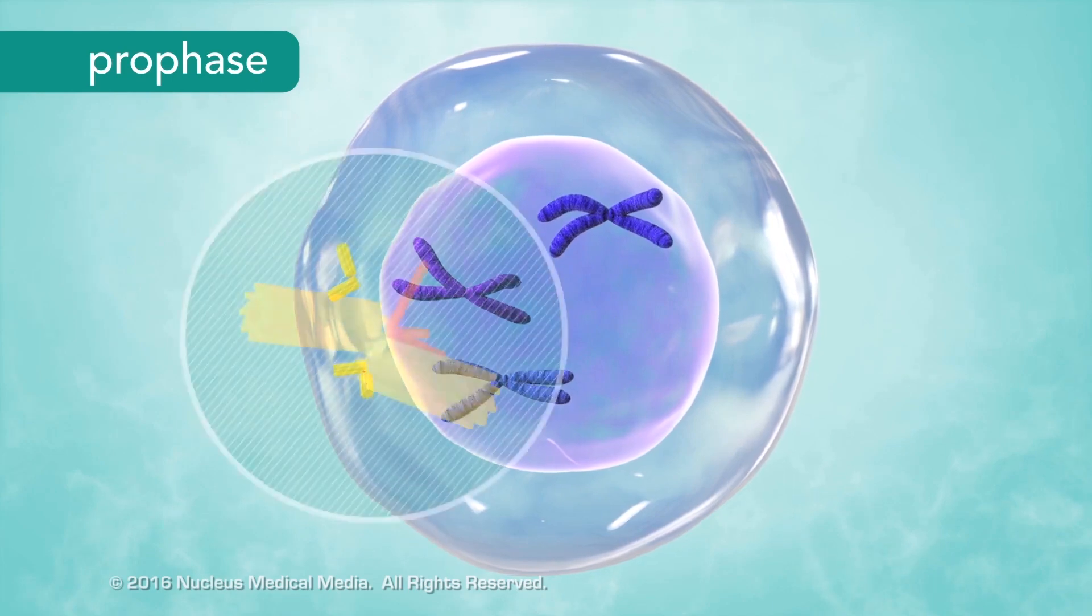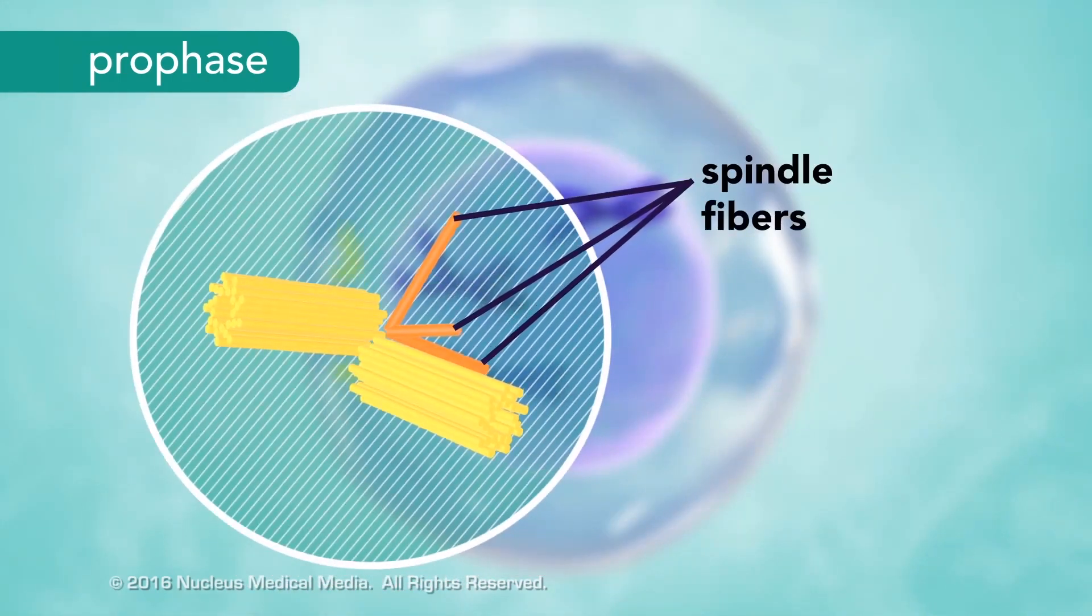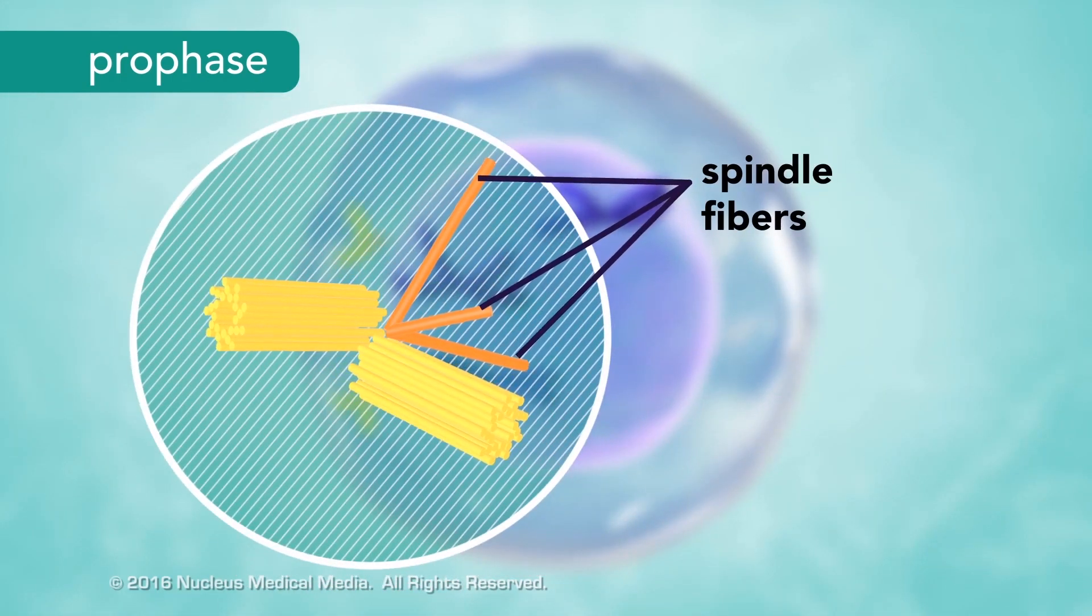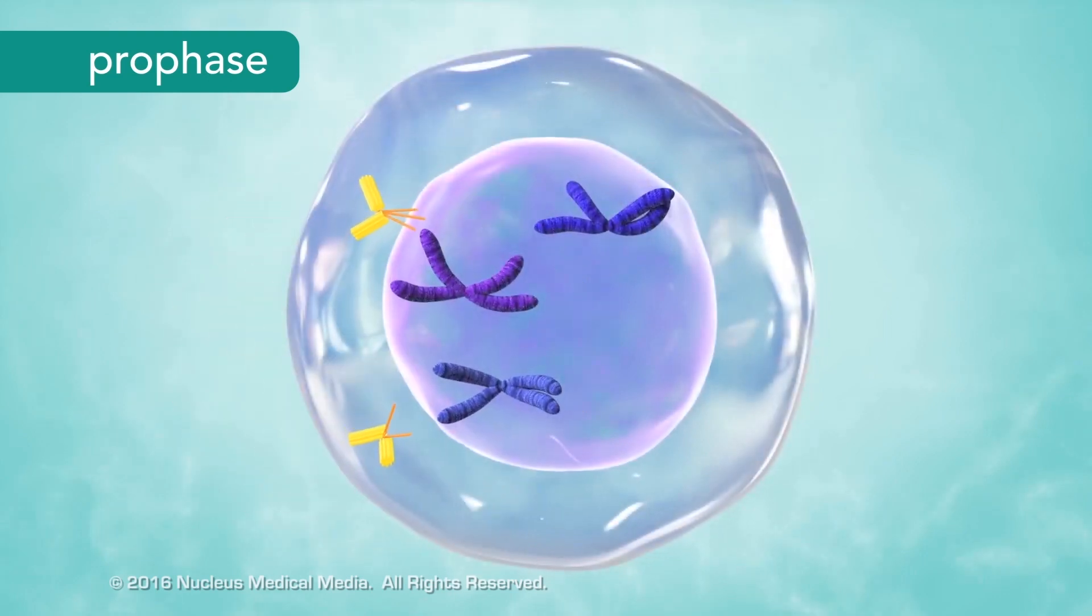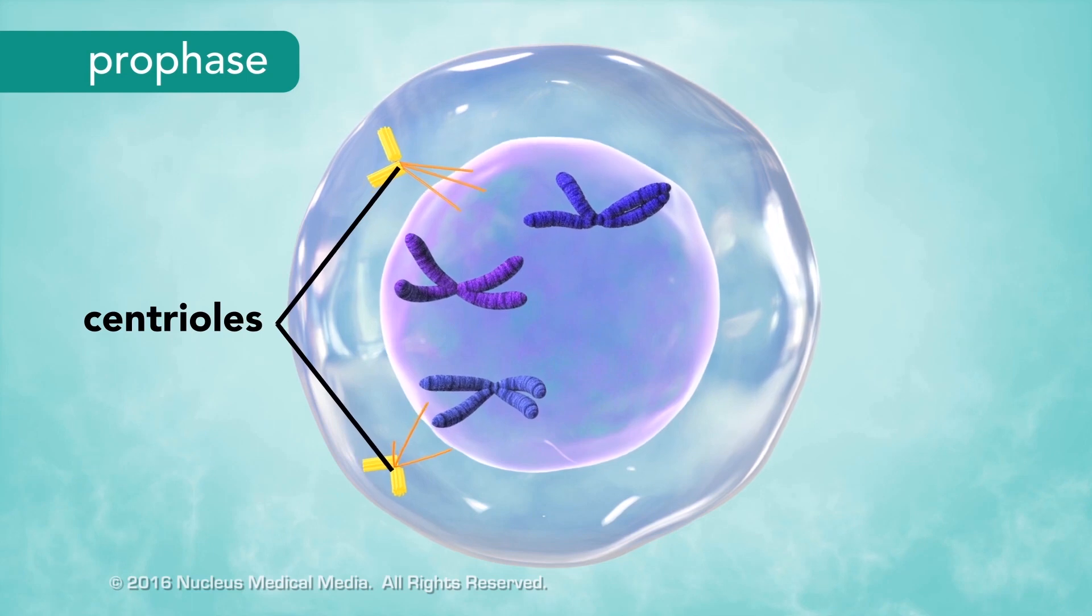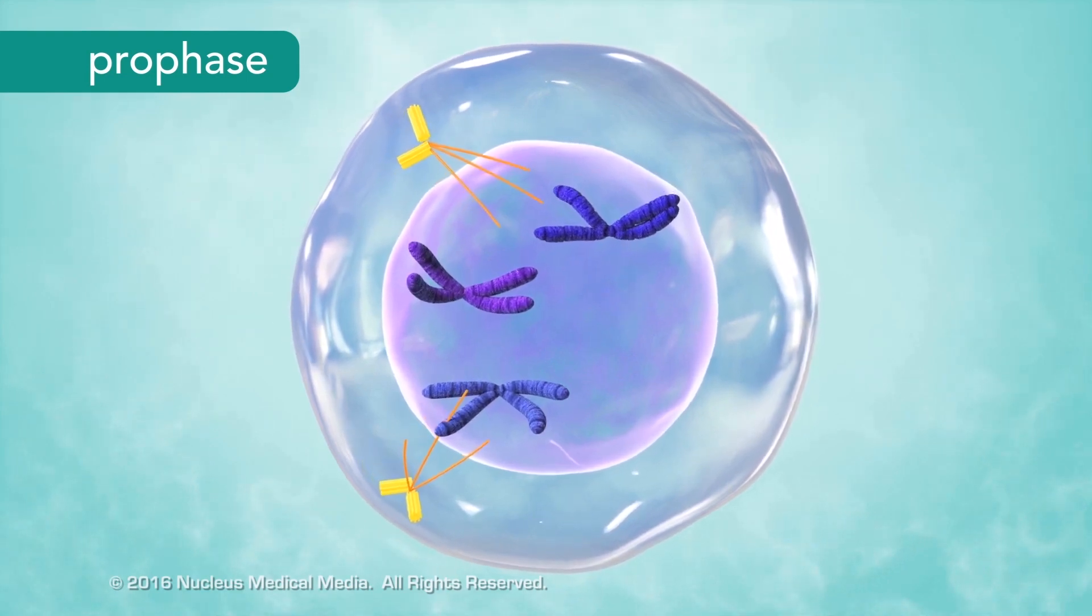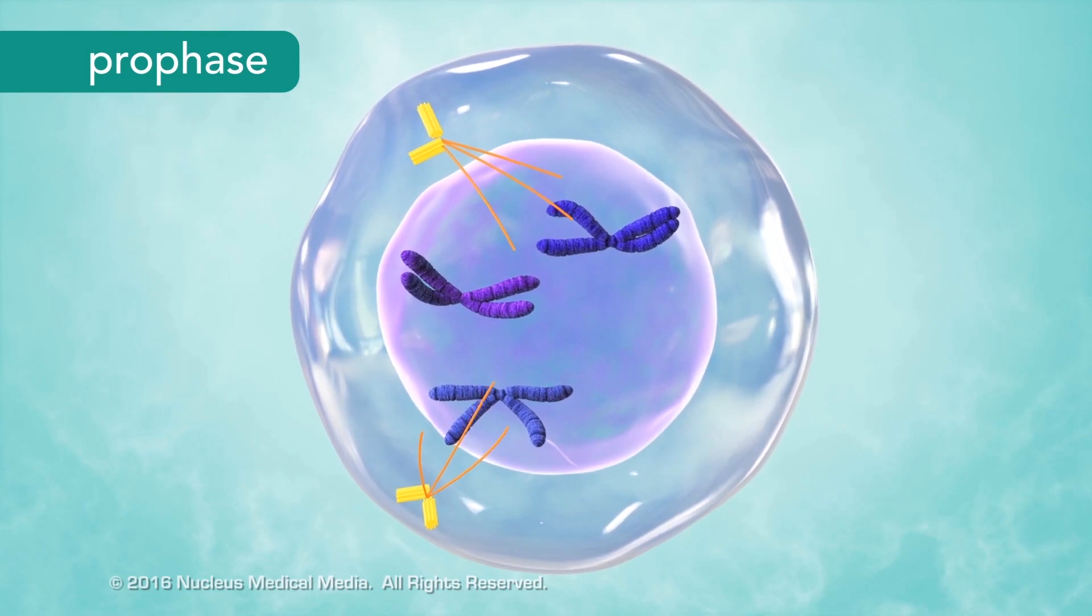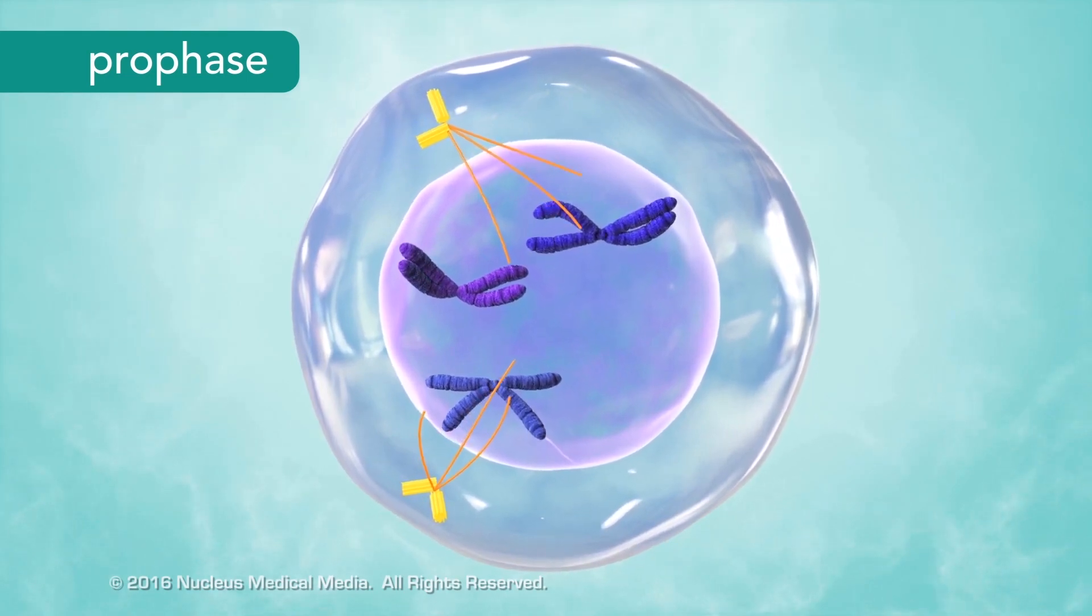Meanwhile, in the cytoplasm, microtubules, known as spindle fibers, begin to fan out from two sets of paired structures, called centrioles. The spindle fibers elongate as the centrioles begin moving to opposite sides, or poles, of the cell.